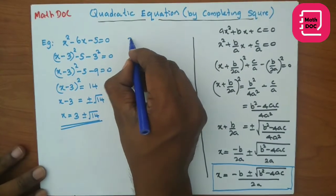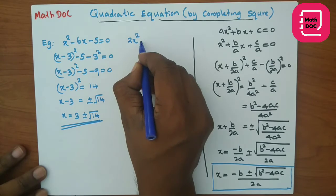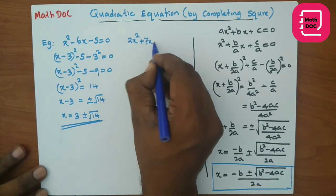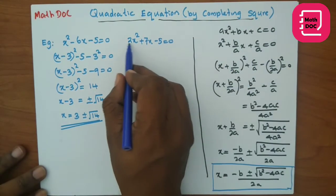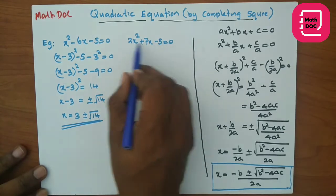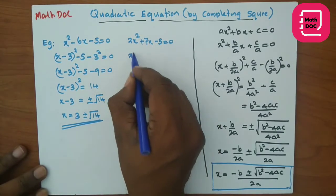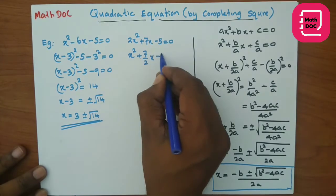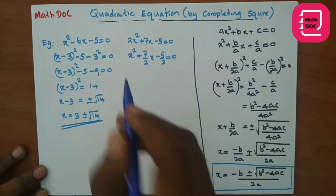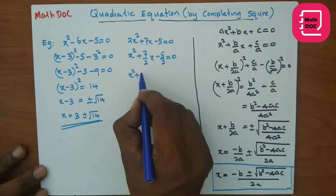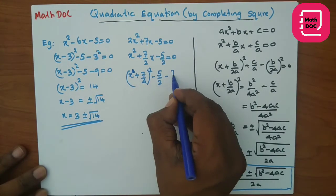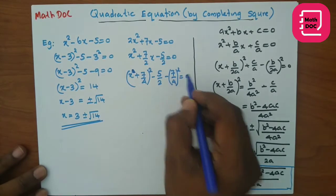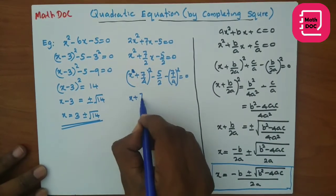Now consider another example: 2x² + 7x - 5 = 0. As per the steps, divide all terms by 2: x² + (7/2)x - 5/2 = 0. Then write the perfect square: (x + 7/4)² - 5/2 - (7/4)².